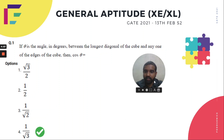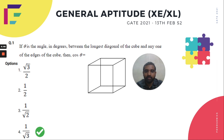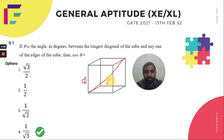The first question is: if theta is the angle in degrees between the longest diagonal of the cube and one of the edges of the cube, then what is cos theta equal to? Let us consider a cube — the longest diagonal will be the space diagonal. If we consider one of its edges as A, then the value of its longest diagonal will be root 3 times A, that is root 3A.